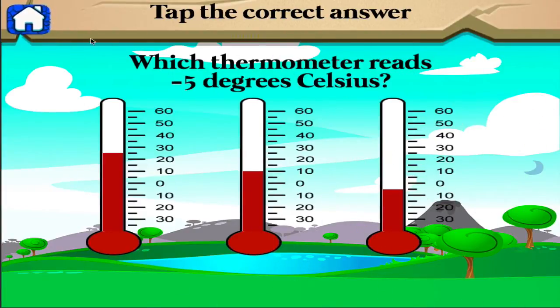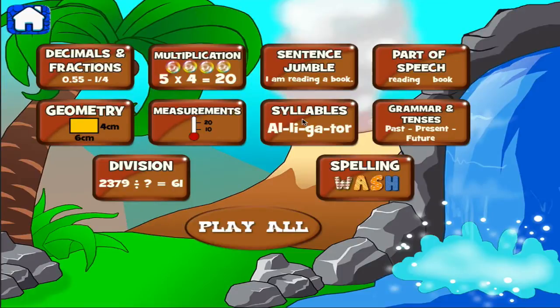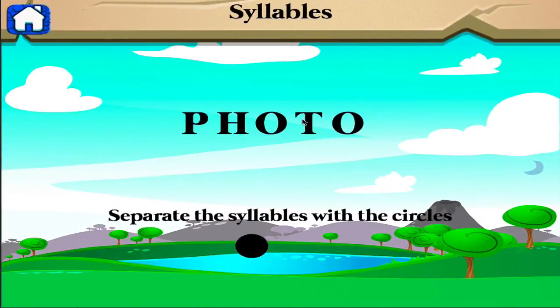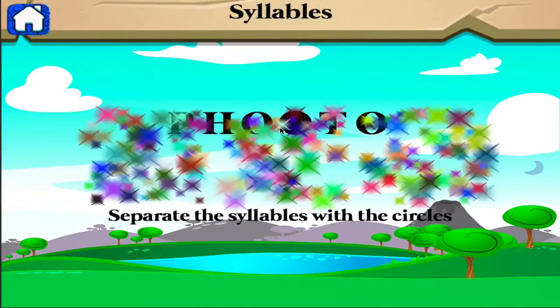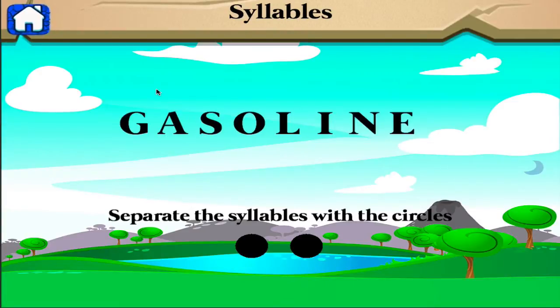Which thermometer reads negative five? Separate the syllables with the circles. Separate the syllables with the circles.